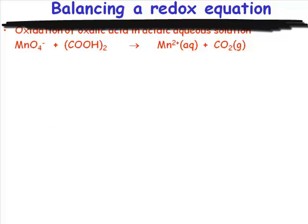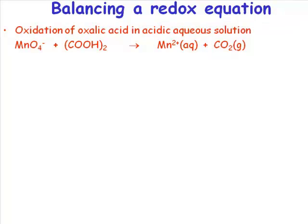Balancing a redox equation. What equation are we going to balance here? We're going to balance this one: permanganate anion plus oxalic acid or diethanoic acid goes to manganese 2 plus and carbon dioxide. So here we have an example of a redox equation.